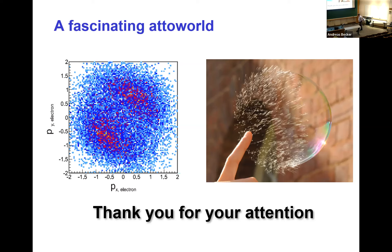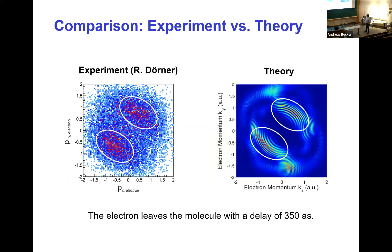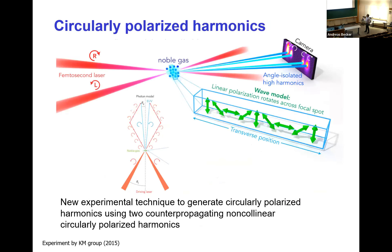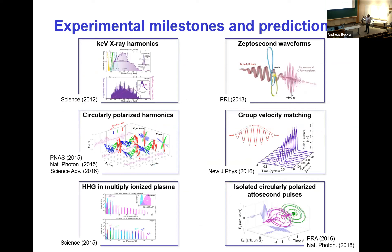If you can make attoclocks with femtosecond pulses, can you do the same thing with attosecond pulses and go to the next level, or are they too weak? In principle, yes — people have started this already, though there are not many results yet. This is one way to get zeptosecond resolution. Beyond attoseconds, it's zeptoseconds — 10 to the minus 21 seconds. There is actually a theoretical prediction together with Margaret and Henry on how to produce zeptosecond waveforms.